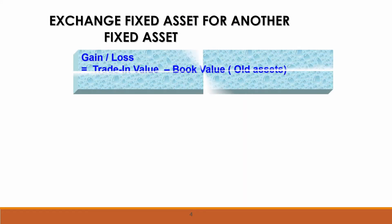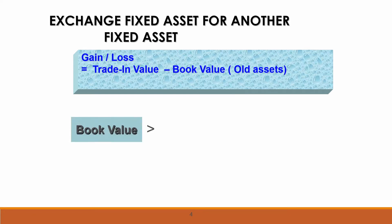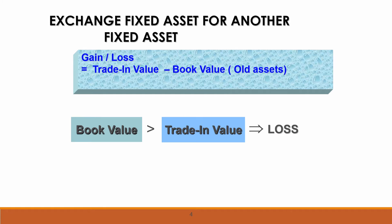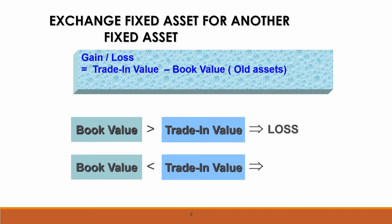When we want to exchange or trade in a fixed asset for another fixed asset, we must calculate gain or loss. We do this by comparing the trade-in value with the book value. When the book value of the old asset is bigger than the trade-in value, we get a loss on disposal. When the book value is smaller than the trade-in value, we get a gain on disposal.